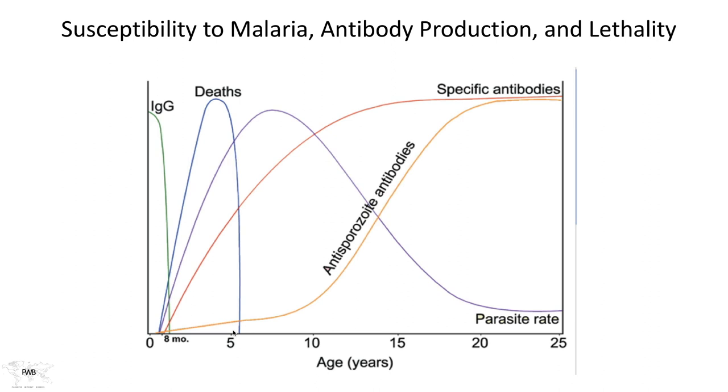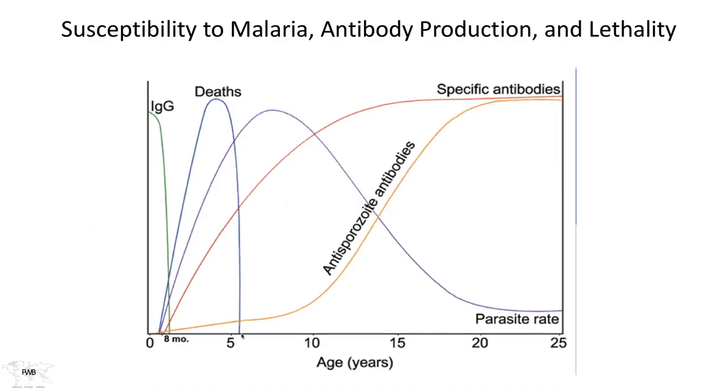As the child matures and develops a strong immune response to the parasites because they're now exposed on a yearly basis during the transmission season — in some cases there is constant transmission, in some places intermittent, and in others seasonal — people who live constantly exposed to the parasites and survive past the age of five are likely to survive until they're 90, at least with respect to the mortality this parasite induces.